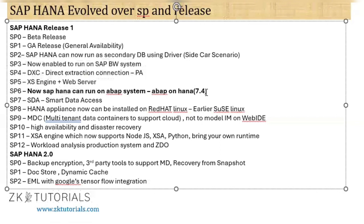SP6 also gave birth to a new product: SAP Business Suite on HANA. ABAP on HANA is the technology, while Suite on HANA is the solution. Just as ABAP is the technology and ECC is the solution, similarly ABAP on HANA is the technology and Suite on HANA is the solution — the product SAP sells you. If you want to create sales orders for your company, SAP will say: buy Suite on HANA.